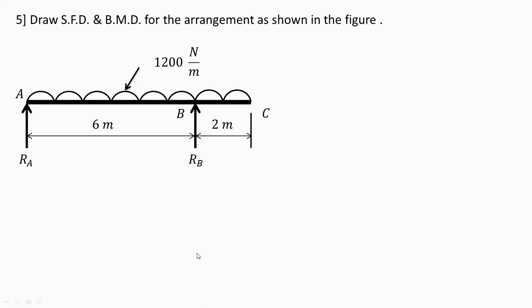In this video, we will see how to draw shear force and bending moment diagram in case of a simply supported beam having an overhang of 2 meters on the right hand side. BC is the overhang, carrying a uniformly distributed load of 1200 N per meter over the entire span length.